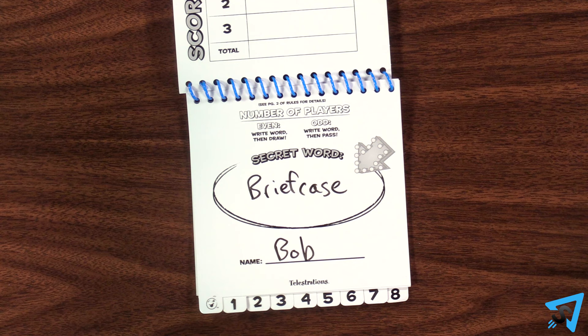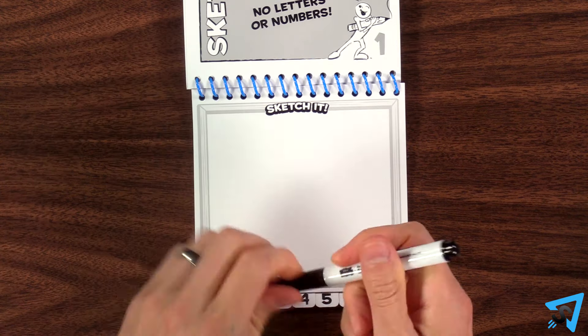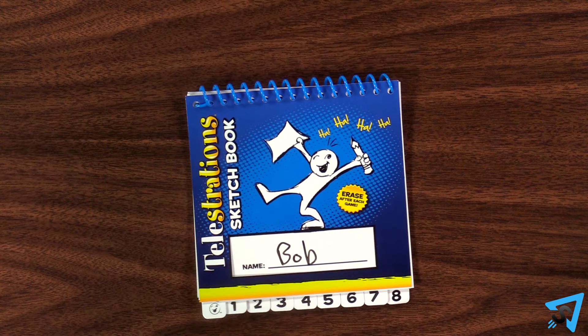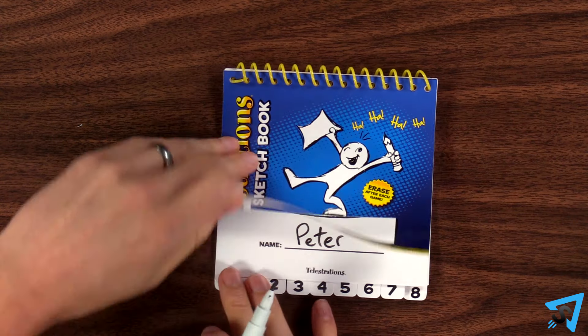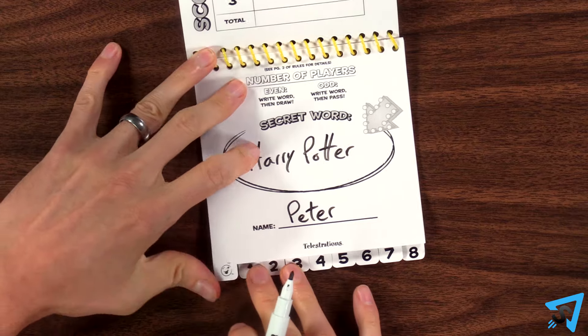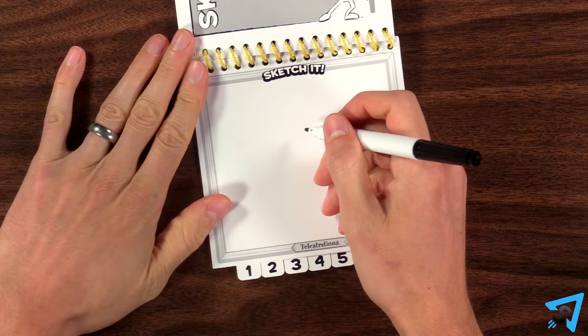If you are playing with an even number of players, everyone turns to page one and prepares to draw their word. If you are playing with an odd number of players, then everyone passes their book to the player on their left, who then turns to page one and prepares to draw the word on that book.